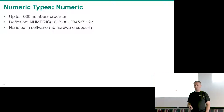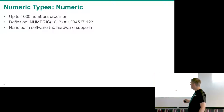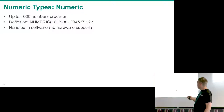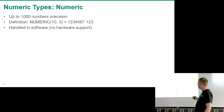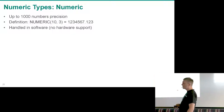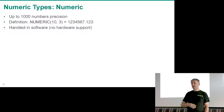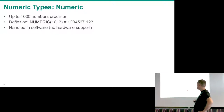If you need to store money, please use numeric. Numeric is precise up to 1000 digits. You define it as numeric(10,3) — the total number of digits and then the number after the decimal point — so seven digits before and three after. Numeric is handled in software, unlike an integer which loads into a CPU register in one cycle, so it's a bit slower.